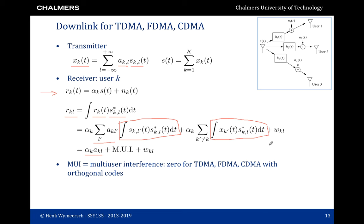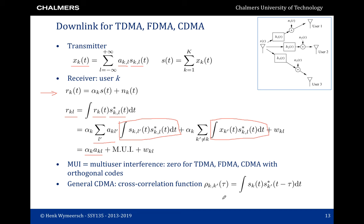In general CDMA, there is a cross-correlation function. If we have orthogonal codes and evaluate this cross-correlation at multiples of T_s, we find 0 except for tau = 0. However, in between those multiples, we can have non-zero values.